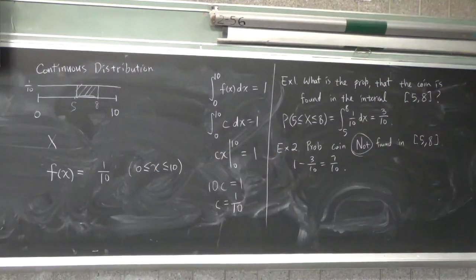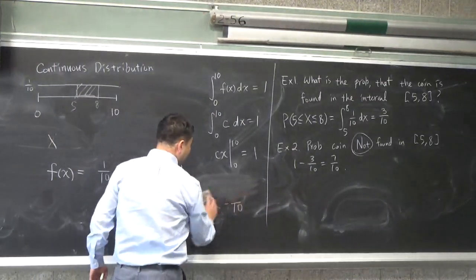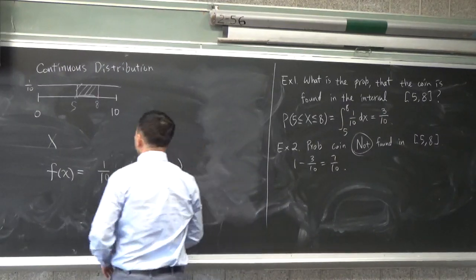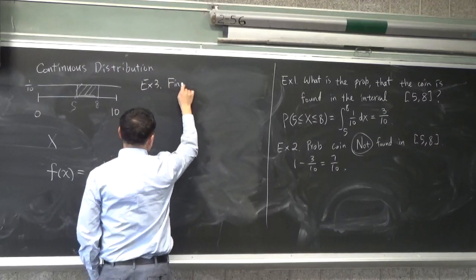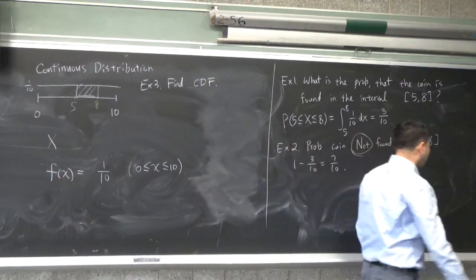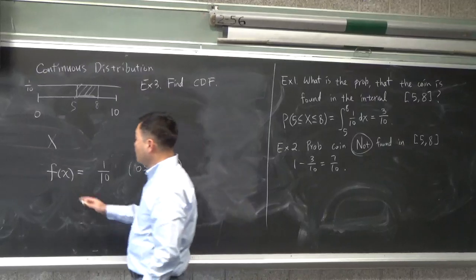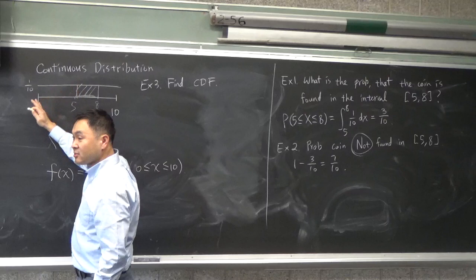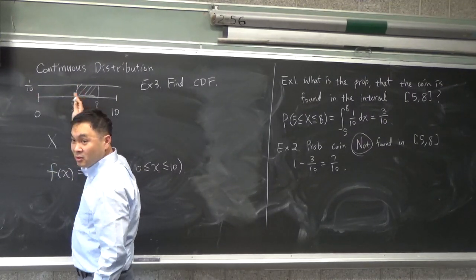But then, we'll make this slightly more complicated by now asking for the cumulative distribution function. So, example 3. Find CDF. Now, what is CDF? CDF is where it's the sum of all the probabilities from the left end point to a certain point.